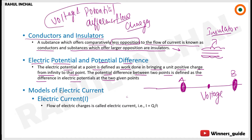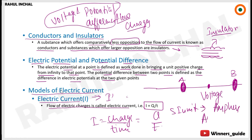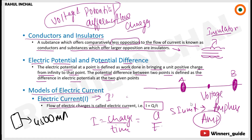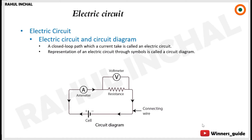Potential difference and voltage are the same thing. Now, electric current — denoted as I — is the flow of electric charges. The formula is I = Q/T, where Q is charge and T is time. The SI unit of electric current is ampere, also written as amp. For example, your smartphone battery might be 4500 milliampere-hours (mAh), and a power bank might be 10,000 mAh — that's the current capacity it stores.